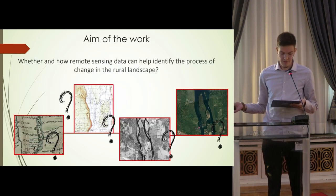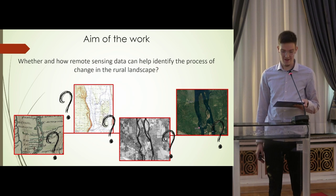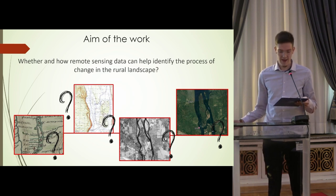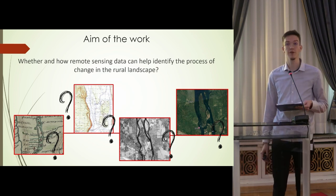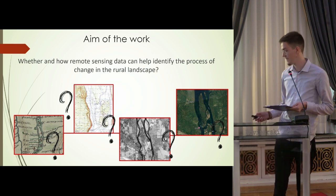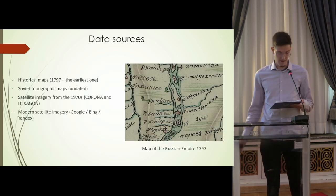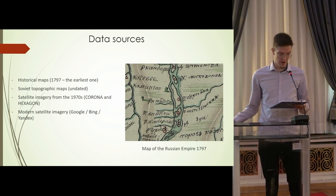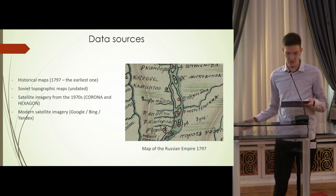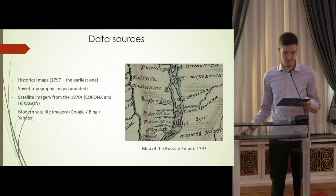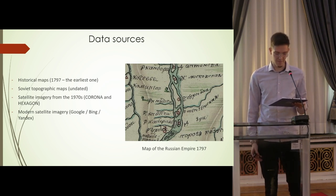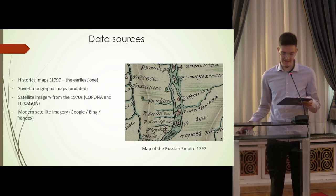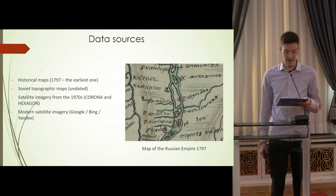The main aim of this work is to answer the question of whether and how remote sensing data can help identify the process of change in the rural landscape. To analyze the rural landscape, I used a historical map of the Russian Empire showing the cultural landscape through the lens of 18th century cartographers.